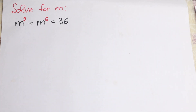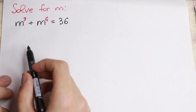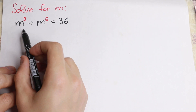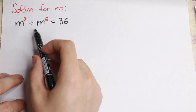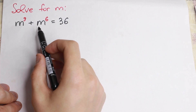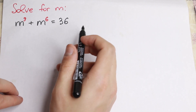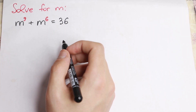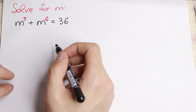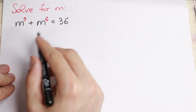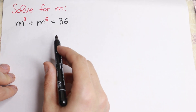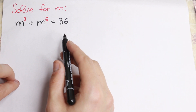Hello everyone and welcome back to higher mathematics. In this video we are going to solve this interesting algebra problem. We have m to the ninth power plus m to the sixth power equal to 36, and we need to find m. How can you solve this interesting equation?